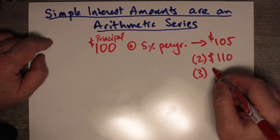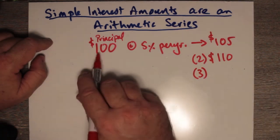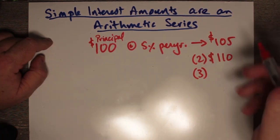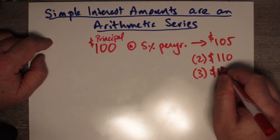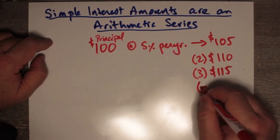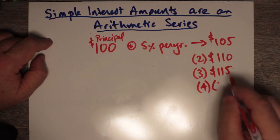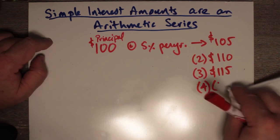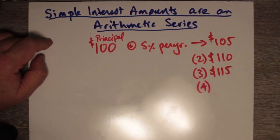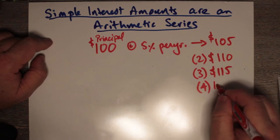In year three, you kind of get the idea. 5% calculated on 100, added to the $110, that's $5 plus $110, that's $115. And for year four, year four is $120.